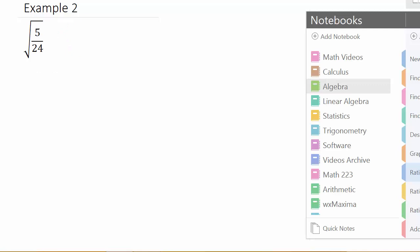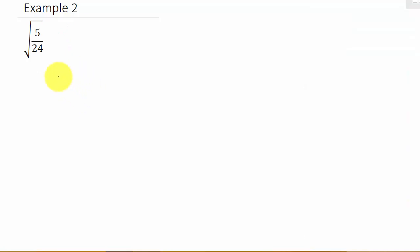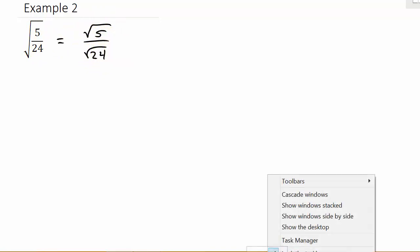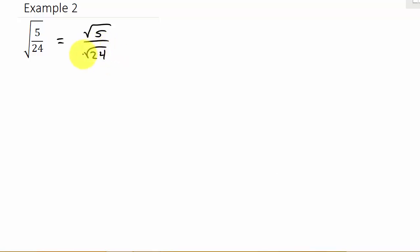I've got five examples to work, so this is number 2. First, we might want to simplify this. The first thing we're going to do is split up the fraction and write it as the square root of 5 over the square root of 24. Now we want to simplify this square root of 24, because 24 has a factor that's a perfect square, which is 4. So I'm going to rewrite 24 as the square root of 4 times 6.